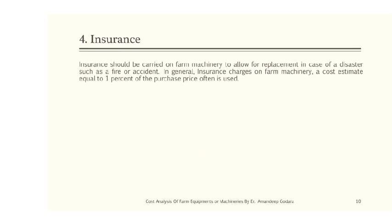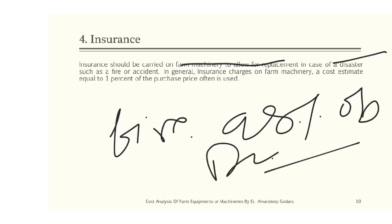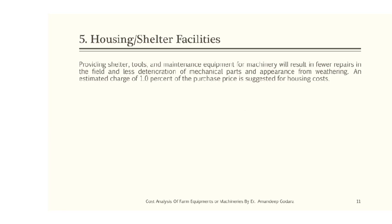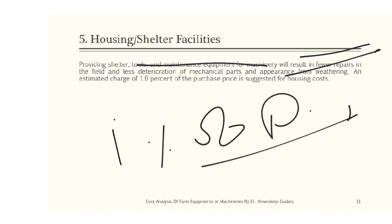Insurance should be carried out on farm machinery to allow for replacement in case of disaster like fire or accident, and it is generally taken as one percent of the purchase price. Housing or shelter facilities: providing shelter and maintenance for machinery will result in fewer field repairs and less deterioration of mechanical parts from weathering. An estimated charge of one percent of the purchase price is suggested for housing cost.